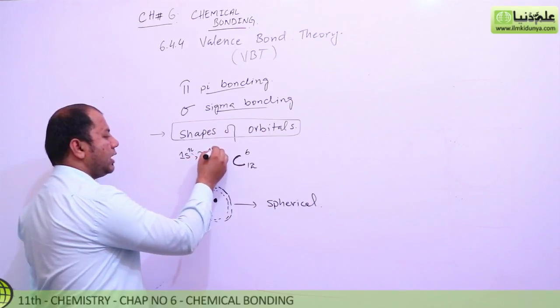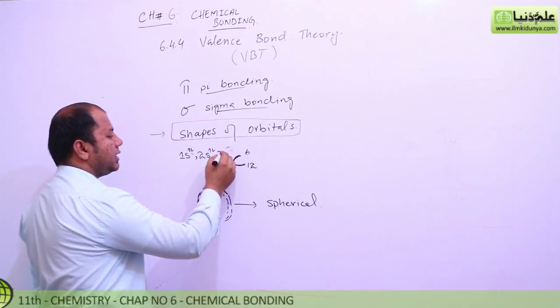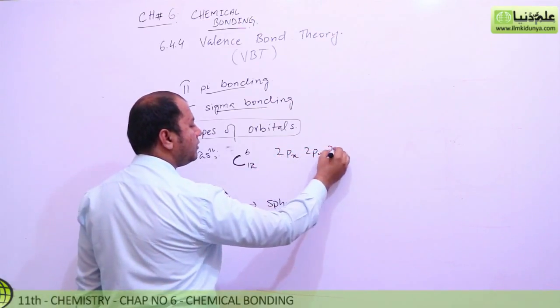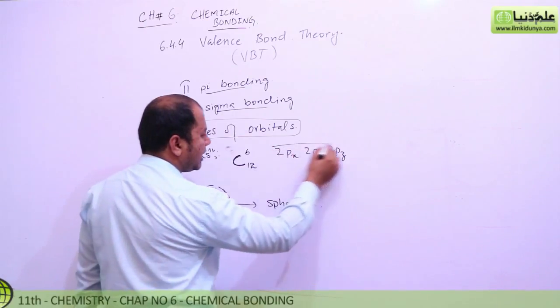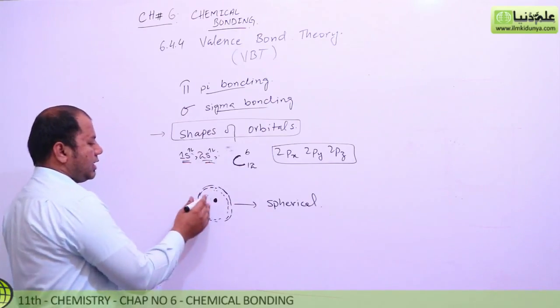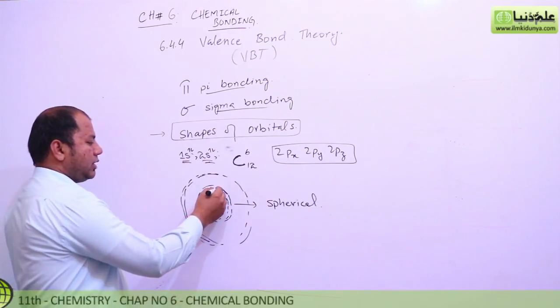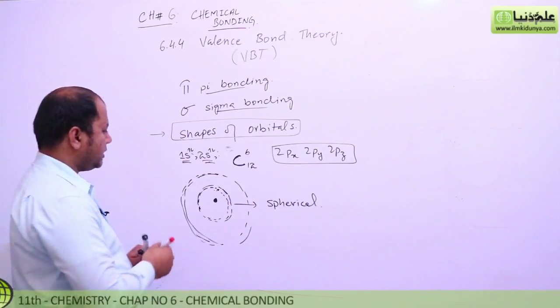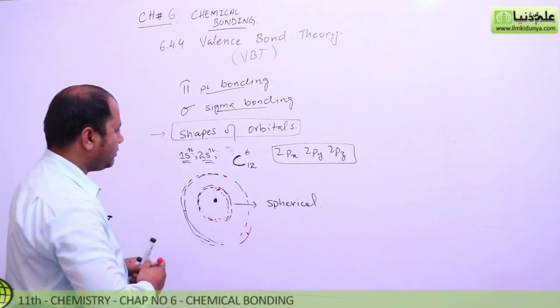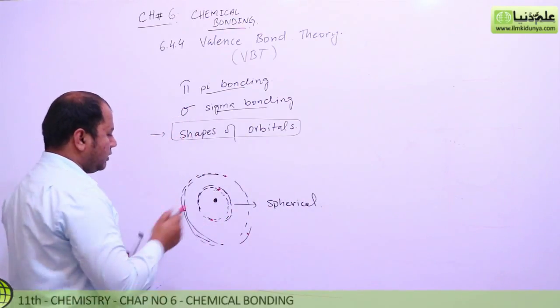Then 2s2 and 2p2. We know that p orbitals are degenerate: 2px, 2py, and 2pz. I want to explain the shapes clearly. The 1s orbital should be spherical, then 2s is larger with 2 electrons. Now for p orbitals - there are three dimensions: X, Y, and Z. Let's position the nucleus here.